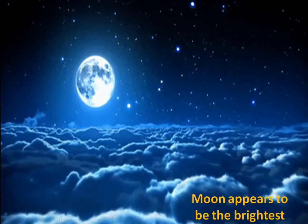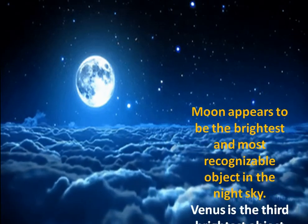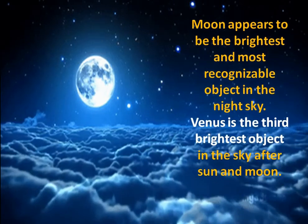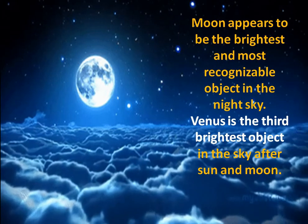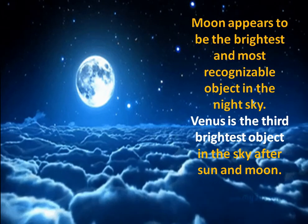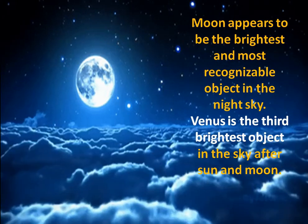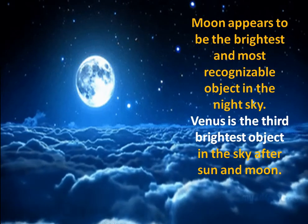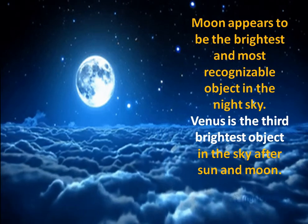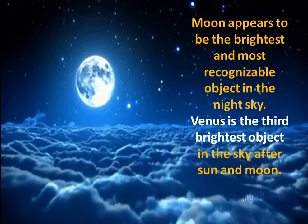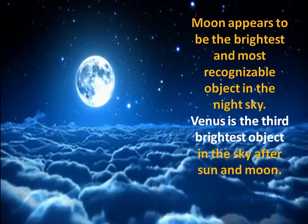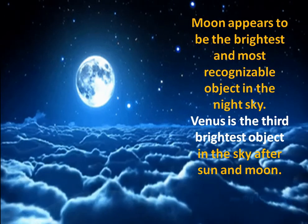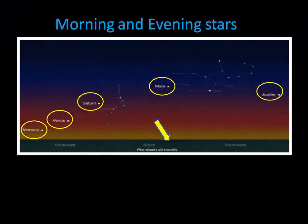In the night, the Moon appears to be the brightest and most recognizable object. Venus is the third brightest object in the sky after the Sun and Moon — so first is the Sun, then it is the Moon, and Venus is the third brightest object in the sky.